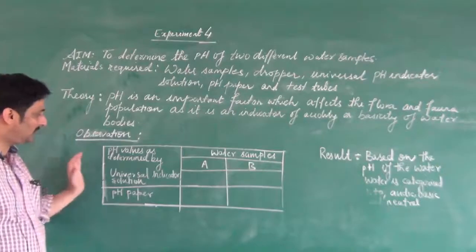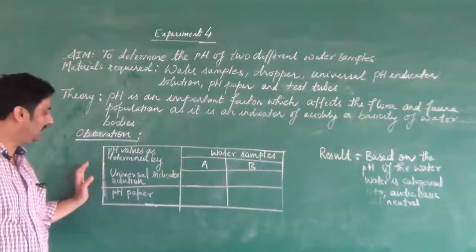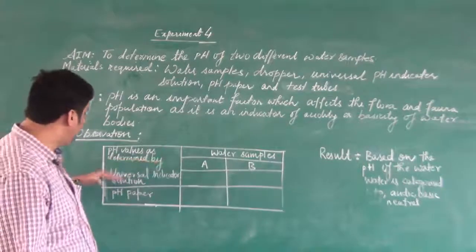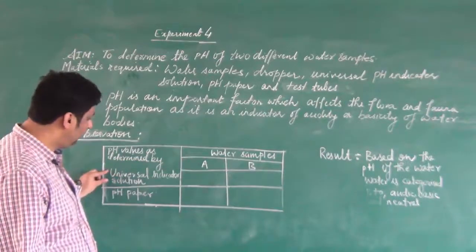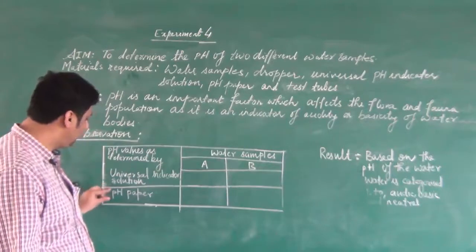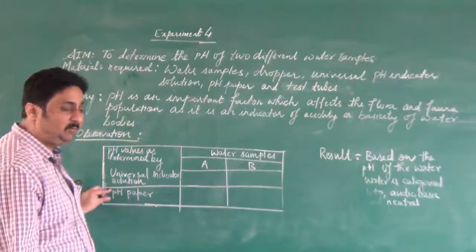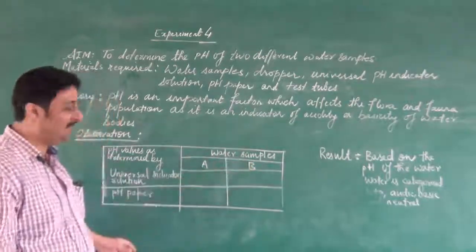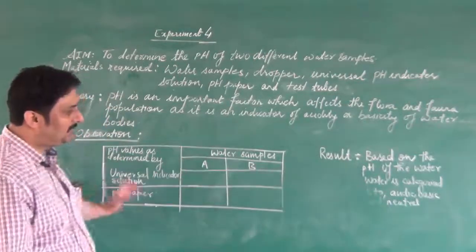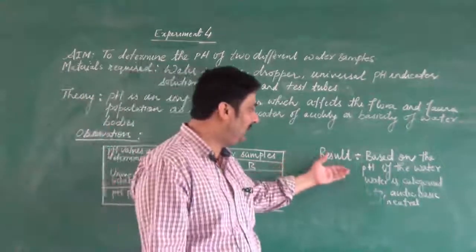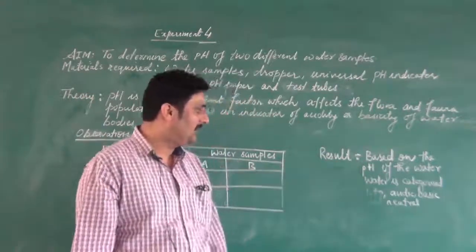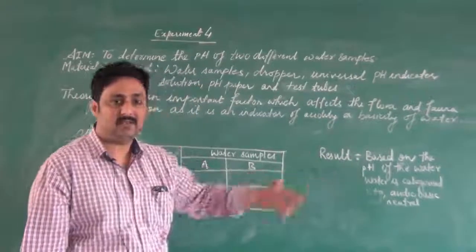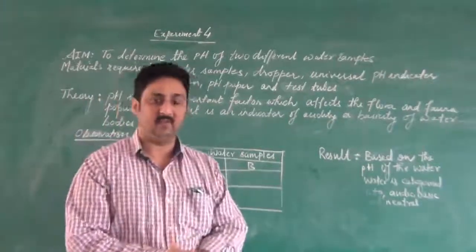Now let us talk about the observation. pH values will be determined by universal indicator solution and pH paper. We have to measure these two water samples, A and B. Based on the pH of the water sample, the result is analyzed whether the water is acidic, basic or neutral in nature.